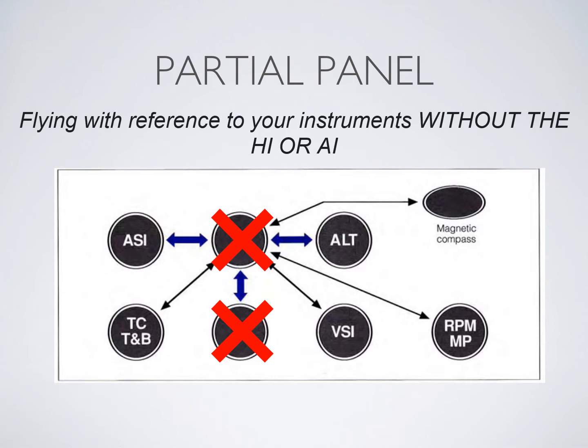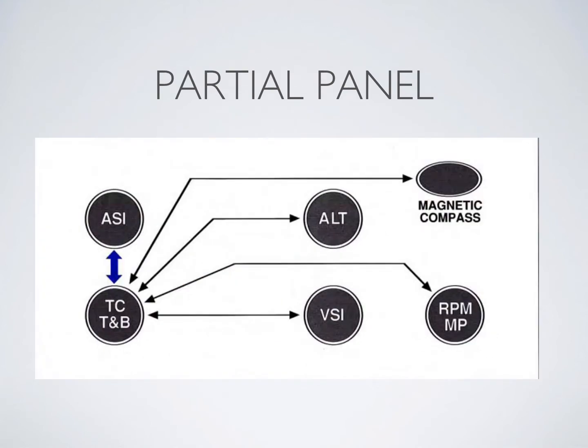If you are flying partial panel, your primary attitude indicator is no longer available, your scan must change, and you're going to use the turn coordinator as your primary. The turn coordinator is electrically powered, running on a completely separate gyro system from the attitude indicator. The attitude indicator runs on the vacuum system — either provided externally or by the engine — while the turn coordinator is electronic. That's why you hear it start up when you turn on the master.